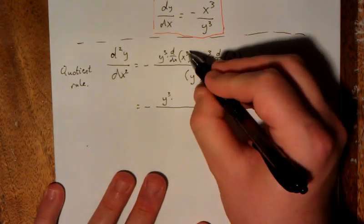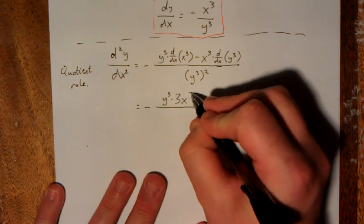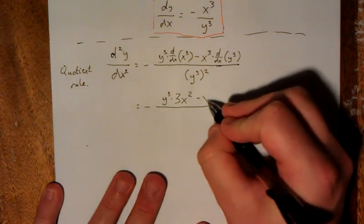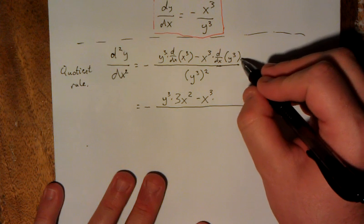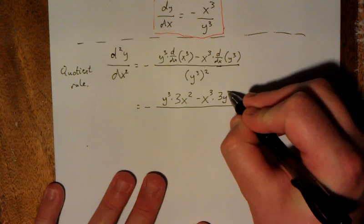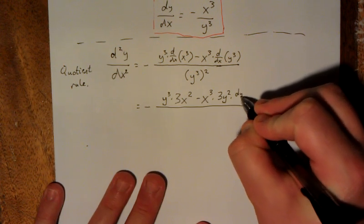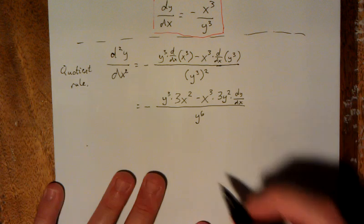So we'll have y cubed times derivative with respect to x of x cubed is a power rule, that'll be 3x squared, minus x cubed times derivative of y cubed. This is going to be another chain rule, or implicit differentiation. We take the derivative with respect to y, and then multiply by the derivative of y with respect to x. This is all over y to the sixth power.